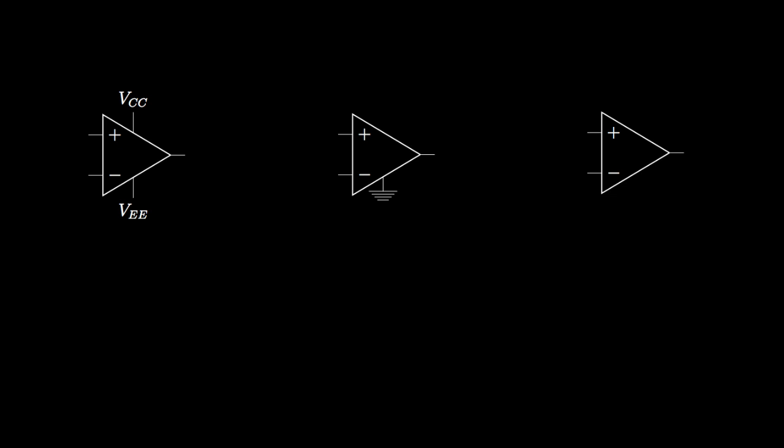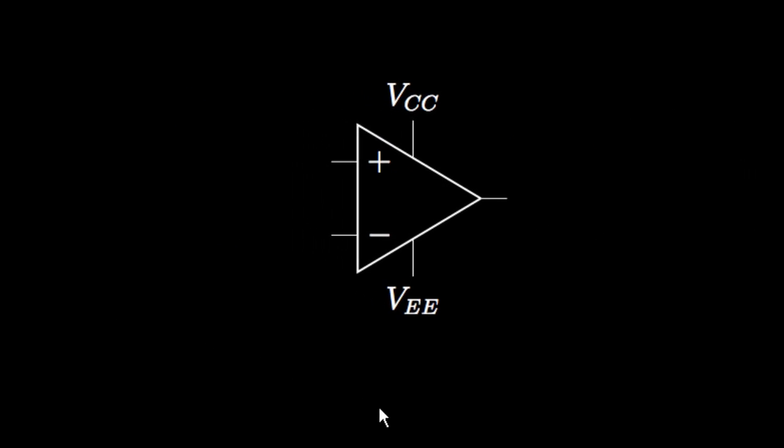When we use an op amp in a circuit we usually use one of three models. An op amp is an active circuit element, which means that unlike a simple resistor an op amp needs to be powered by some sort of power supply in order to operate. The gain provided by its internal voltage controlled voltage source doesn't come for free, and this is attained by providing one or more voltage sources to the circuit. When this is important to the analysis, we'll show an op amp within a circuit like this.